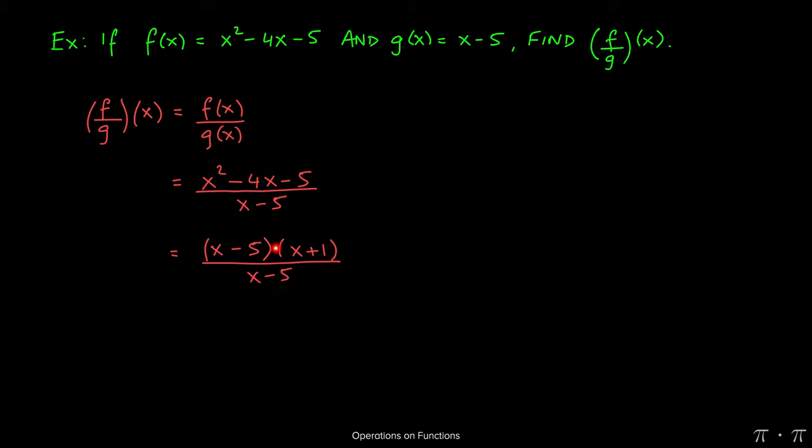Because I have a product in the numerator and only a single term on the denominator, I can cancel the two x minus 5s, leaving behind just x plus 1.